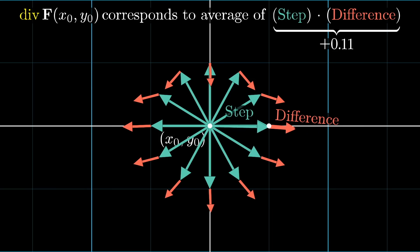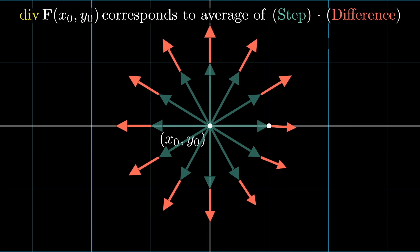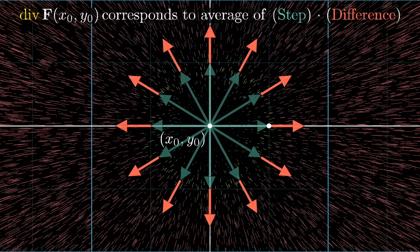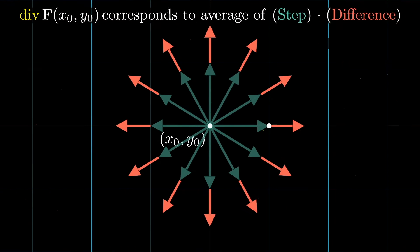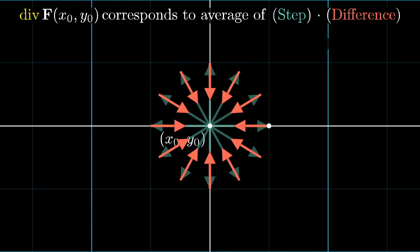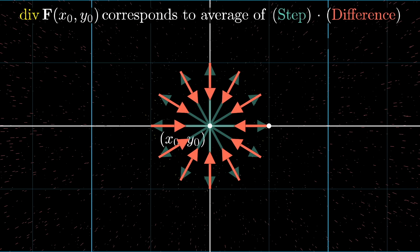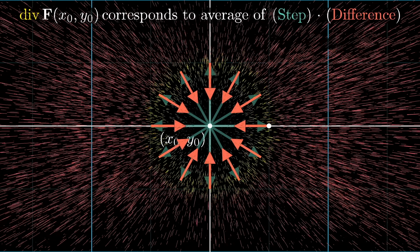I mean, think about it. If a step in some direction causes a change to that vector in that same direction, this corresponds to a tendency for outward flow, for positive divergence. And on the flip side, if those dot products tend to be negative, meaning the difference vector is pointing in the opposite direction from the step vector, that corresponds with a tendency for inward flow, negative divergence.